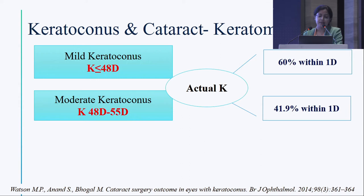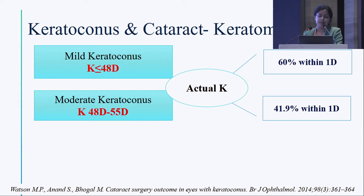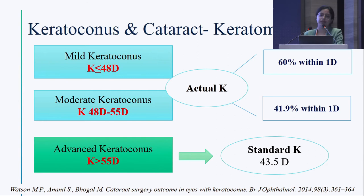Studies have observed that for mild keratoconus (K less than 48 D) and moderate keratoconus (48–55 D), using the actual keratometry from biometers or topographic devices gives 60% of eyes within ±1 diopter for mild, and 41.9% for moderate — less than normal cataract but still acceptable. For advanced keratoconus greater than 55 D, all formulas become unreliable, and a standard K of 43.5 D has been found to perform better.